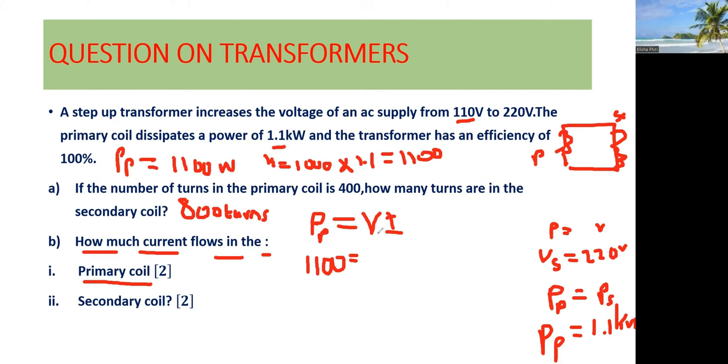Which is equal to, what's the voltage in the primary coil, across the primary coil? The voltage is 110. Then we have current P, which we are actually resolving here. Our interest is to find the current through the primary coil. So divide 110 on both sides of the equation, so that you remain with current this side. You can as well cancel the zeros. So we're going to say current through the primary coil is equal to 10 amps. So we have determined the current through the primary coil, that is 10 amperes.